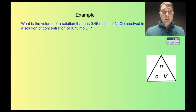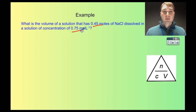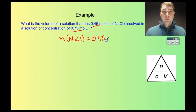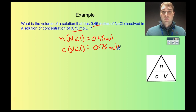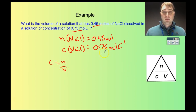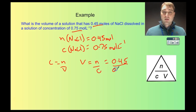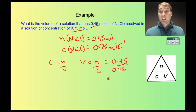Let's look at another example. What is the volume of a solution that has 0.45 moles of sodium chloride dissolved in a solution of concentration 0.75 moles per litre? The important values are 0.45 moles — that's our number — and 0.75 moles per litre as our concentration. So my number of moles of sodium chloride is 0.45 moles, and my concentration is 0.75 moles per litre. Writing the equation: C equals N on V, rearranged to V equals N on C.